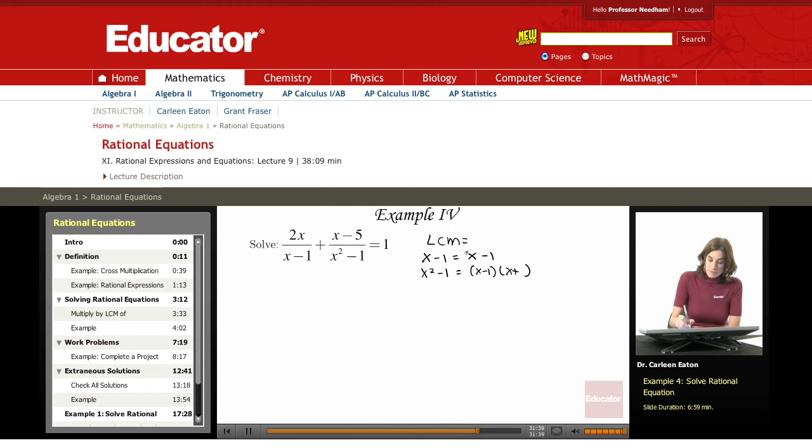So the LCM is going to be x minus 1. I already have that accounted for here. But I have an x plus 1 that's unaccounted for. So this is the LCM. In this case, the LCM is actually equal to this second denominator. So I don't really have to do anything with that.